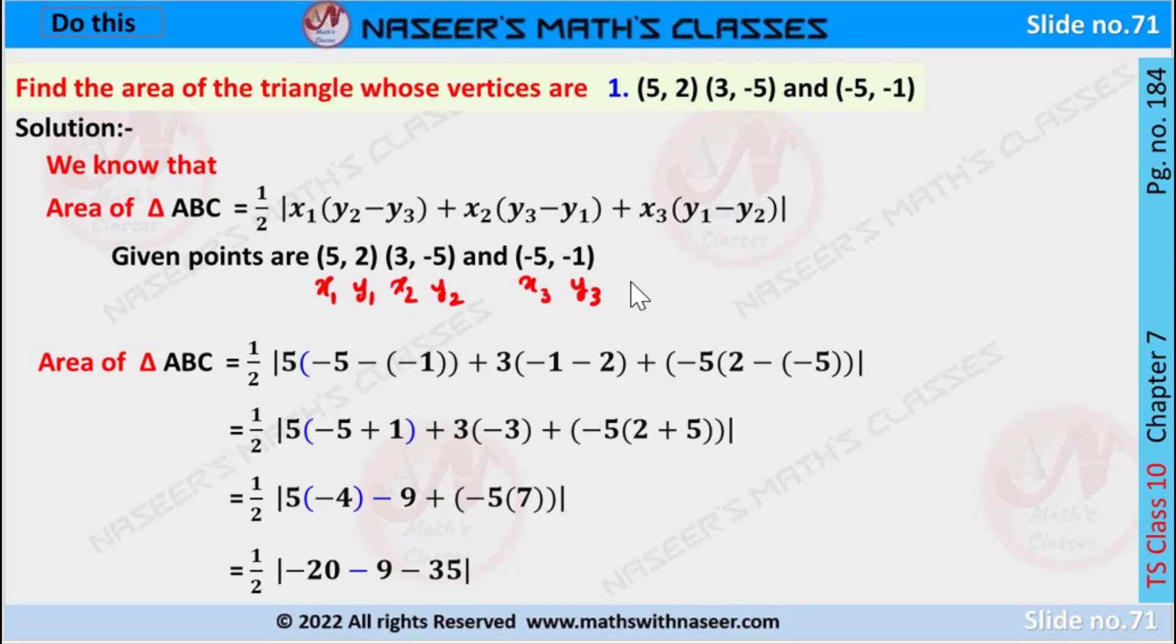Putting these values in the formula, then we get 1/2 times mod[5(-5 - (-1)) + 3(-1 - 2) + (-5)(2 - (-5))].